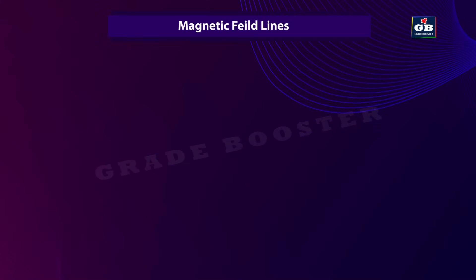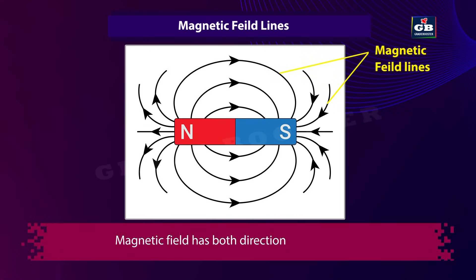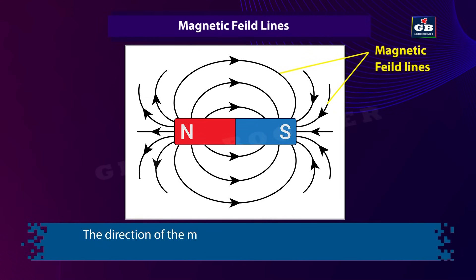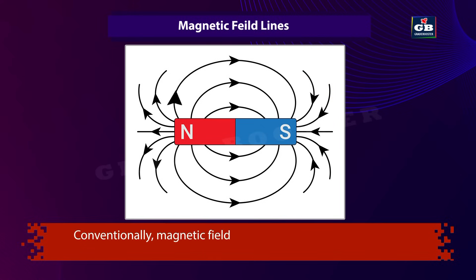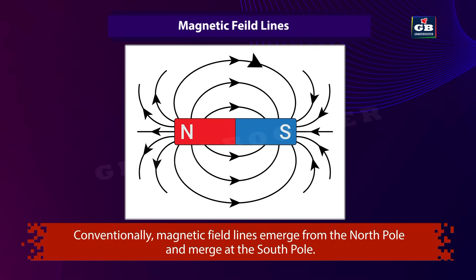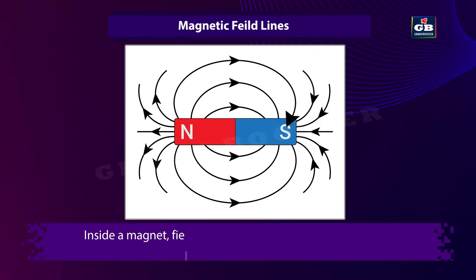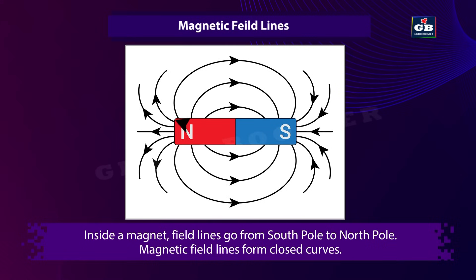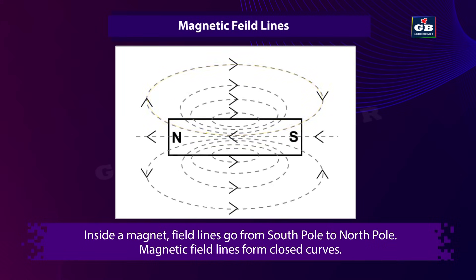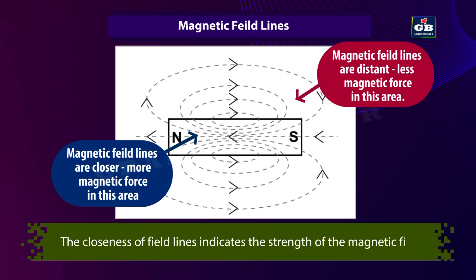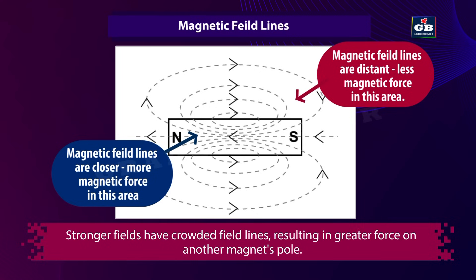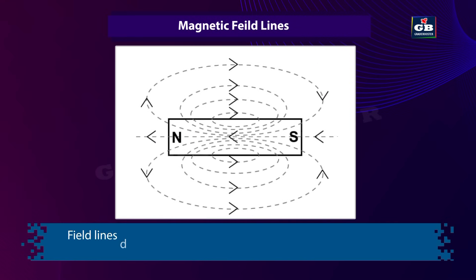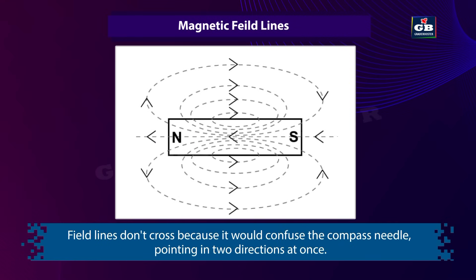Magnetic field lines: Magnetic field has both direction and magnitude. The direction of the magnetic field is where the north pole of a compass needle points. Conventionally, magnetic field lines emerge from the north pole and merge at the south pole. Inside a magnet, field lines go from south pole to north pole, forming closed curves. The closeness of field lines indicates the strength of the magnet — stronger fields have crowded field lines, resulting in greater force. Field lines don't cross because that would mean the compass needle points in two directions at once.